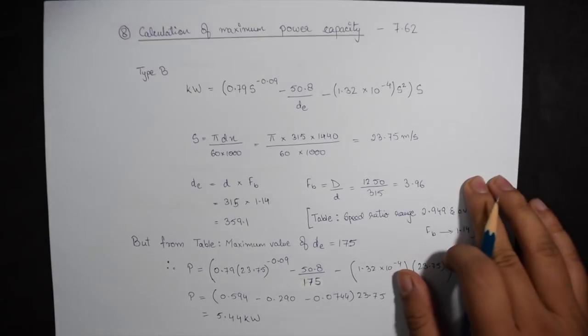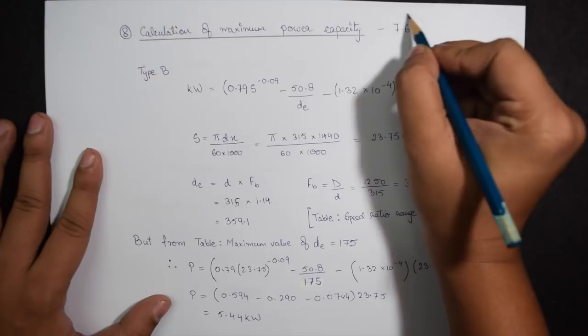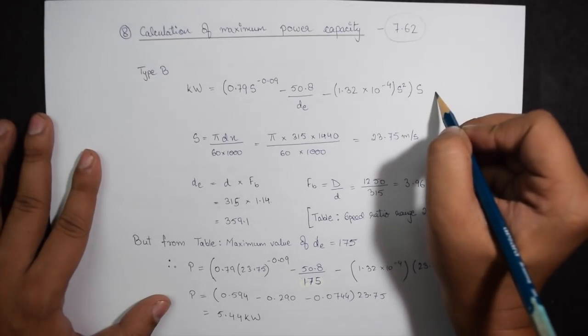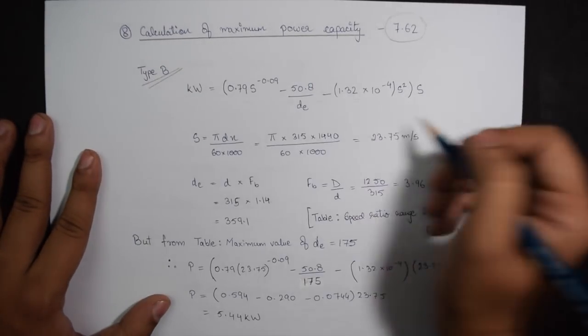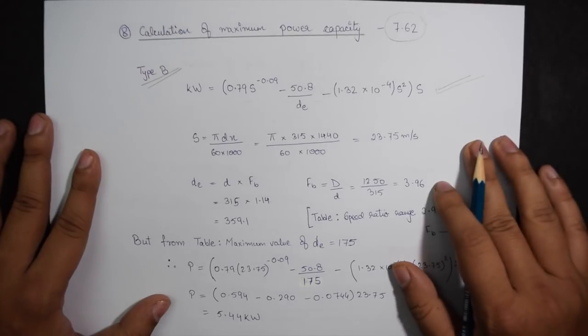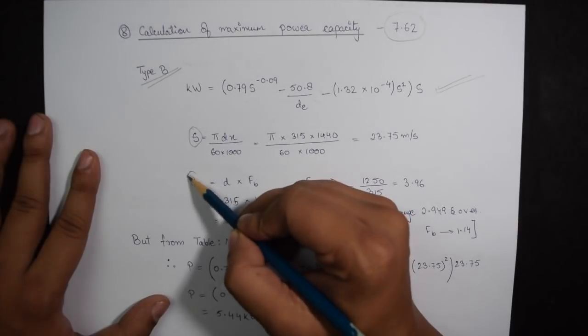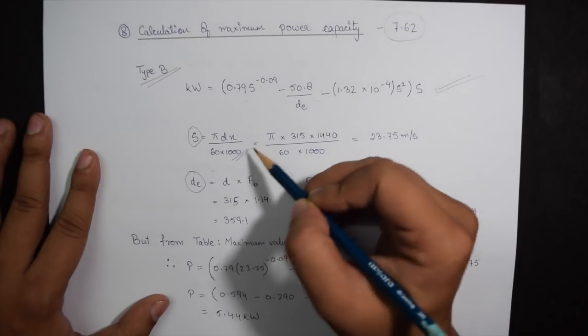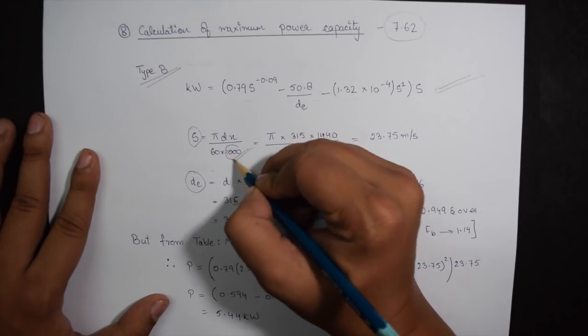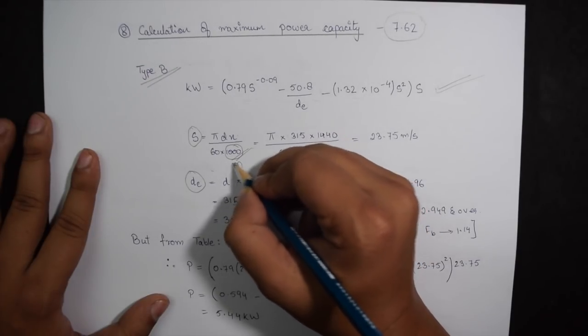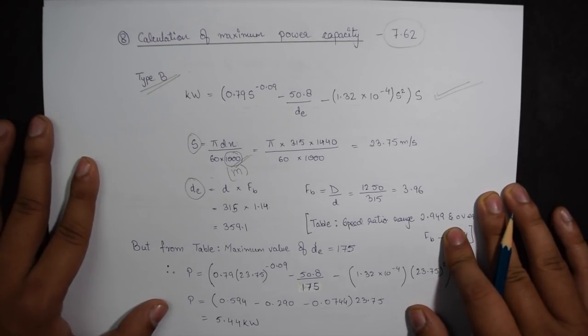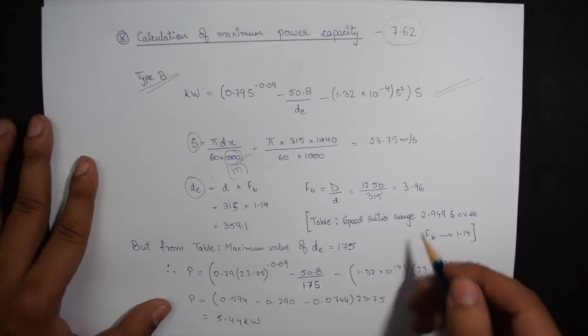Continuing on with the procedure step 8 states that calculation of maximum power capacity given on page 7.62. Now we see that the belt cross section which we chose was type B. So the complete formula is given over here. In this formula two of the things are unknown which is S and DE. The formula to calculate S is pi D and divide by 60 into 1000. We divided the complete equation by 1000 because we needed to convert D which was in mm to meters. So the value of S comes out to be 23.75 meter per second.